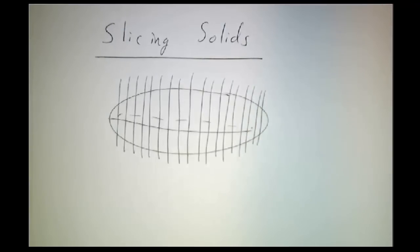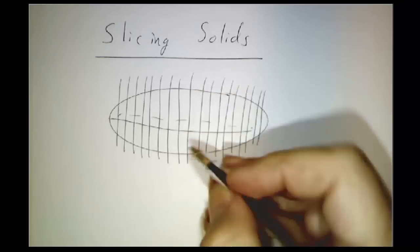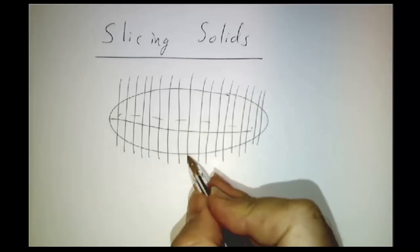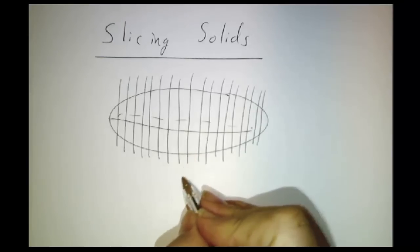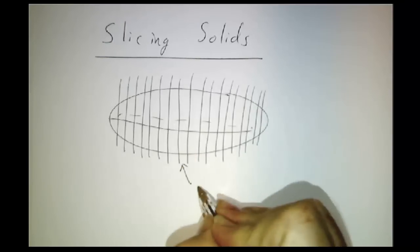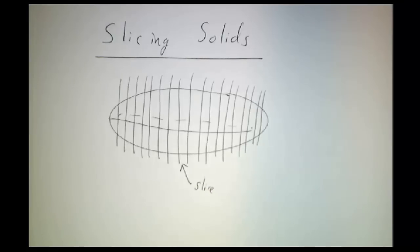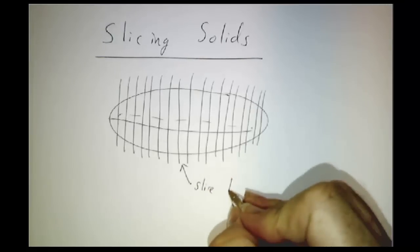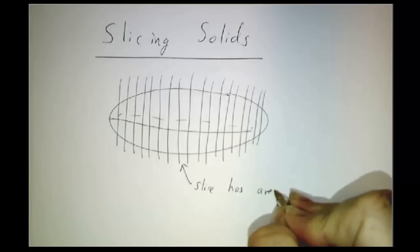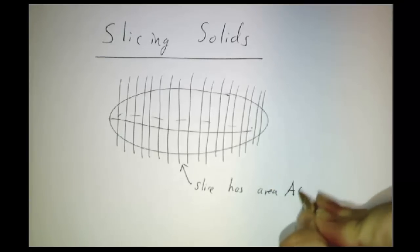The question is, what's the volume of each piece? So each piece, when we cut it, gives us something two-dimensional. So here we have a slice. The slice has a certain area and let's call the area A of x.